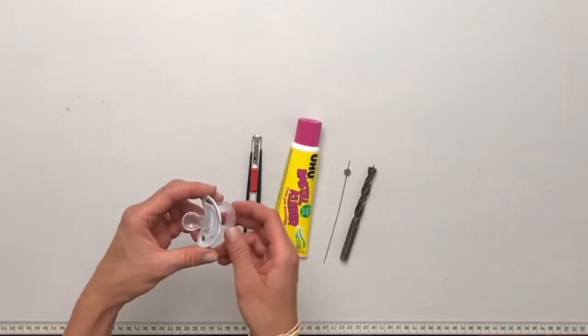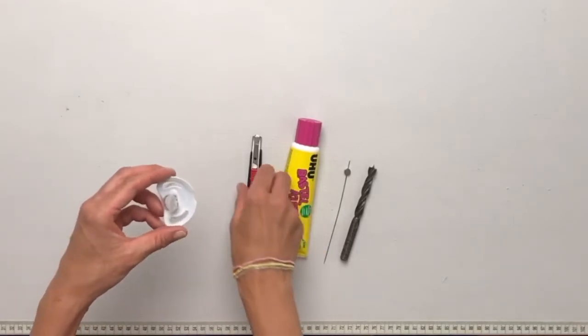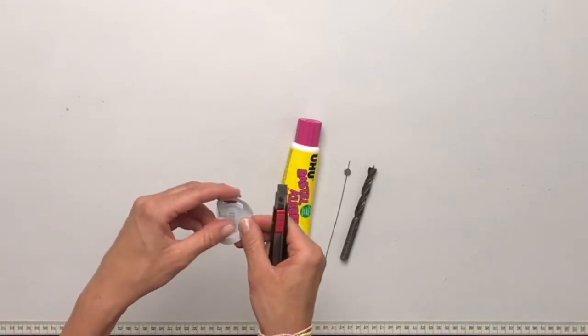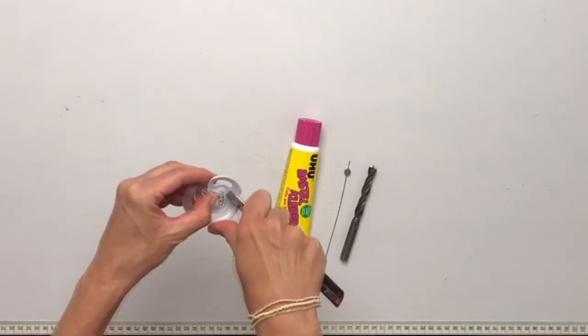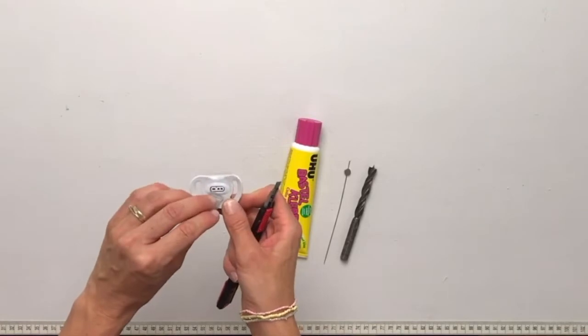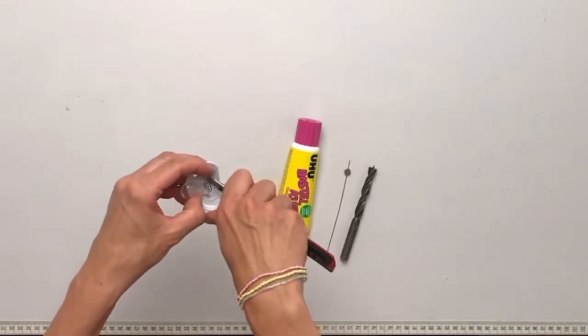The first thing we're going to do is remove the silicon part from the pacifier with a cutter. You flip it over and cut it out just like that. On the other side too. It's actually quite easy.